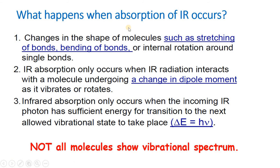What happens when absorption of IR occurs? As already mentioned, the bonds are flexible — that is, they can be stretched or compressed. So when a molecule absorbs infrared radiation, there may be changes in the shape of the molecule, such as stretching of bonds, bending of bonds, or there may be some internal rotation about single bonds.